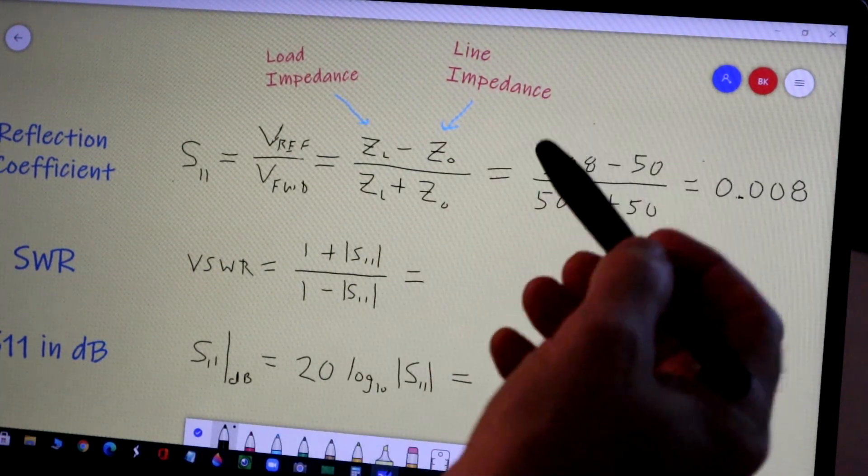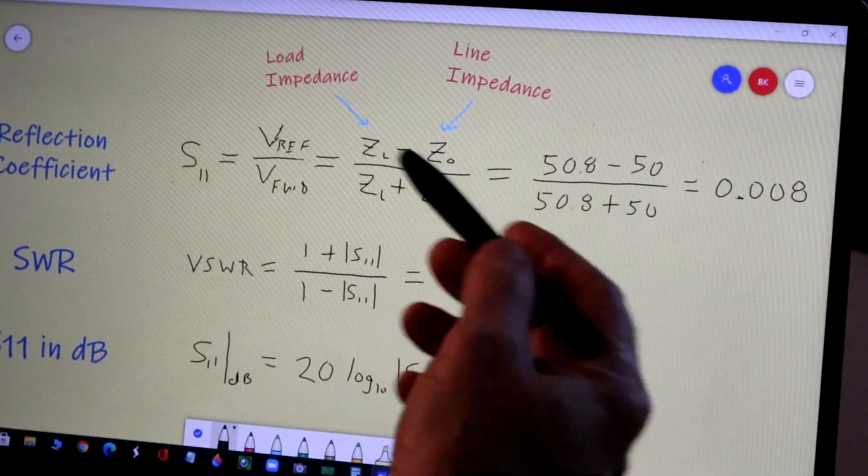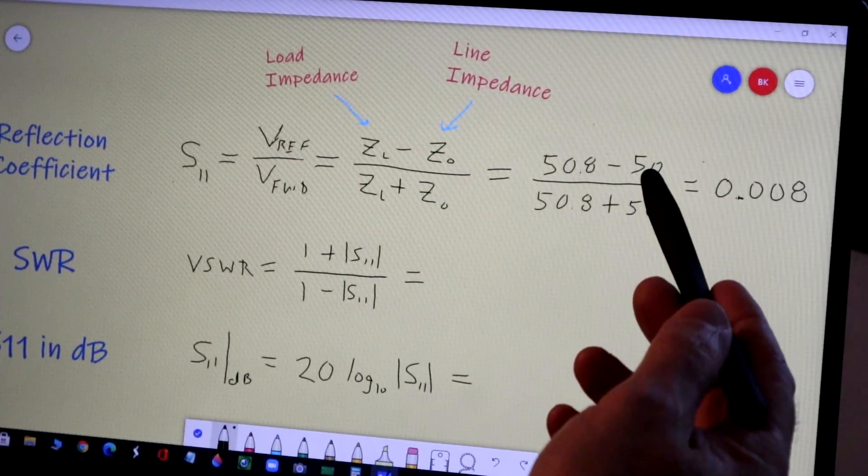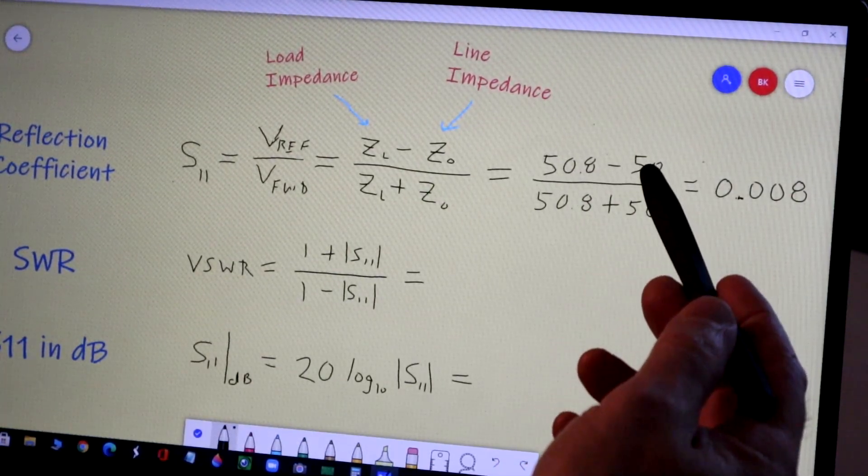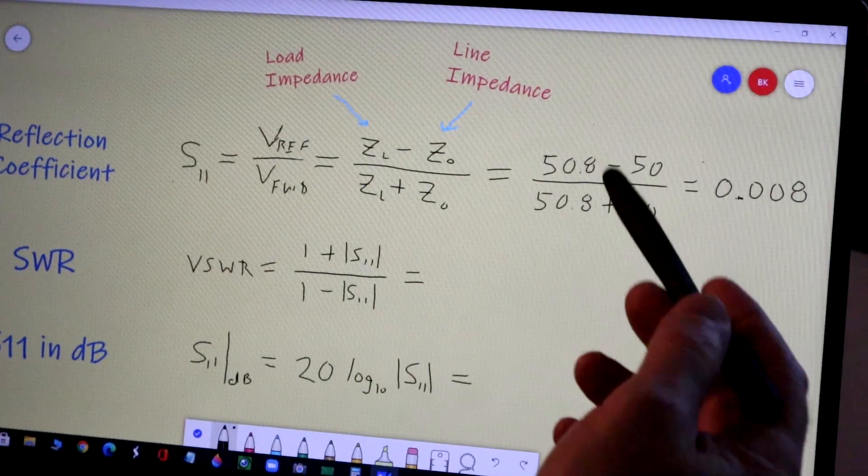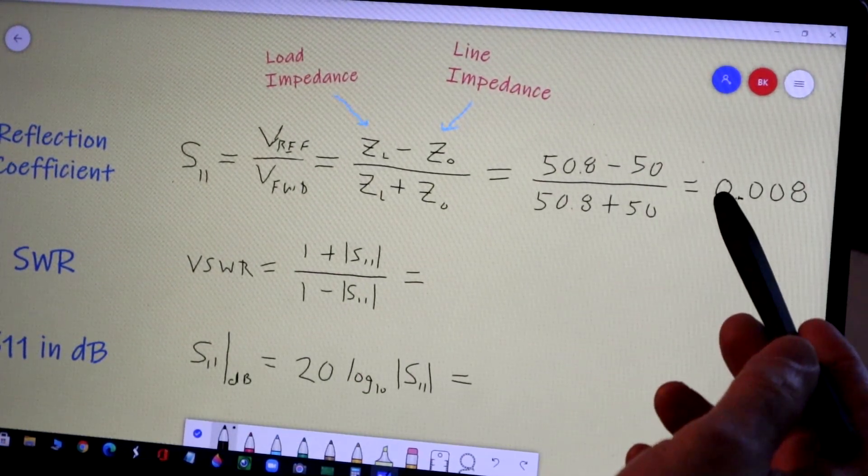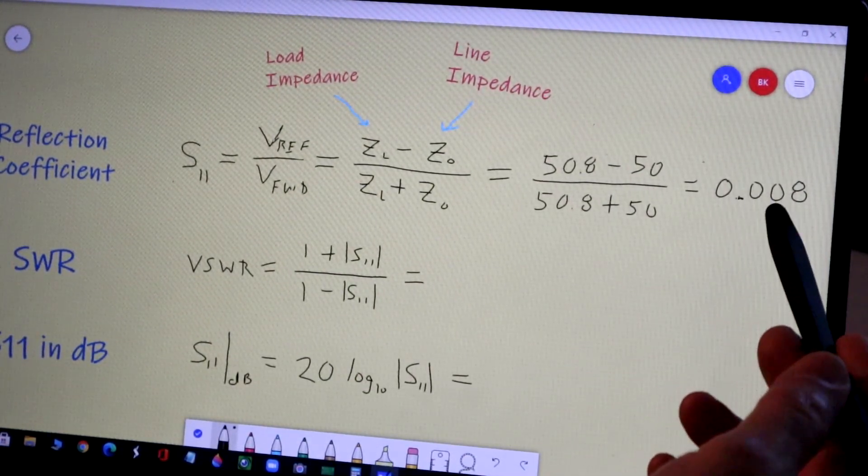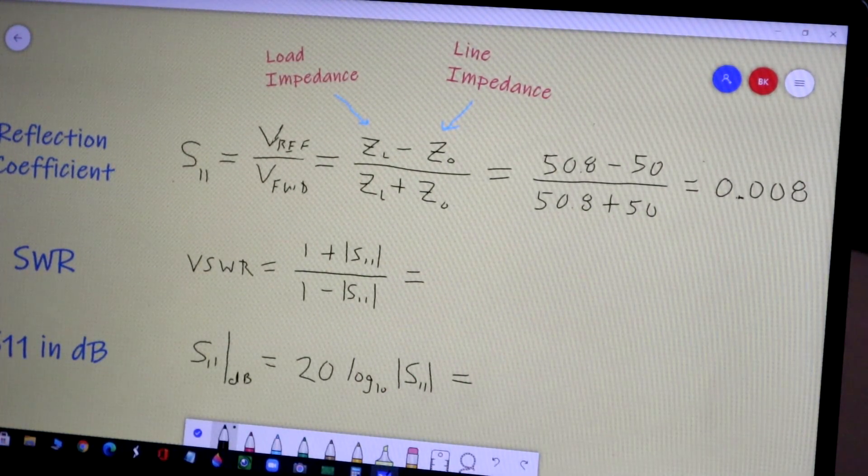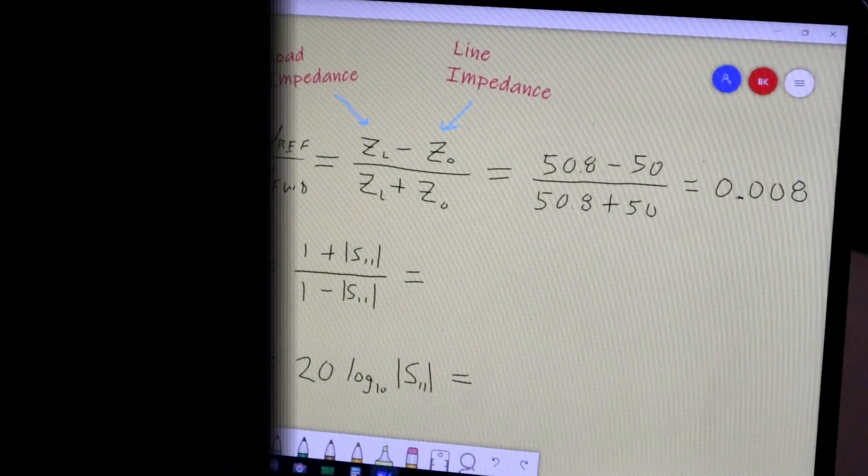So I plugged our measurement of 50.8 ohms into this formula along with the 50 ohm line impedance of the coaxial cable. And what I get is 50.8 minus 50 is 0.8 divided by 100.8. So 0.8 over 100.8 works out to be 0.008. So less than 1/100th is how much voltage is reflected.